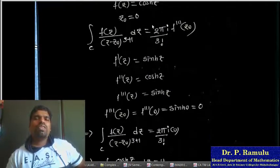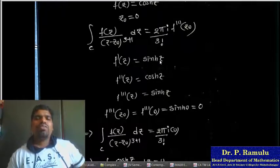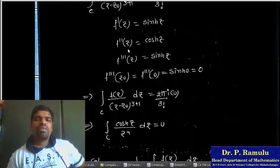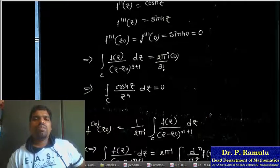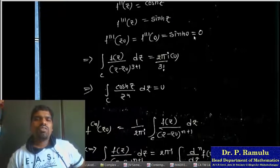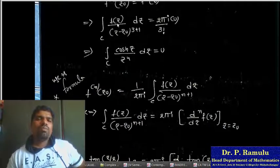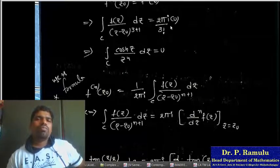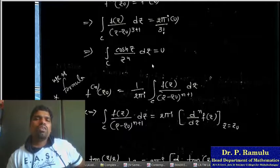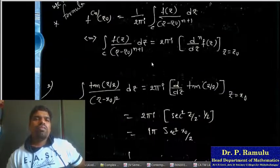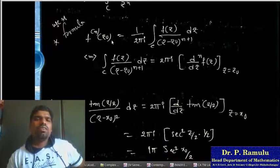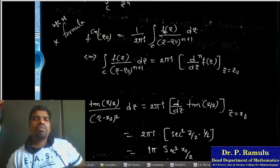Given F(z) = cos z. F double dash of z equals cos z. F double dash of z equals sin H zero. F double dash of z equals cos z, with conditions 1 plus x₀ and F value equal to z plus 0.